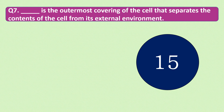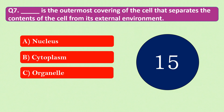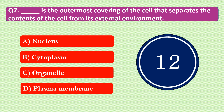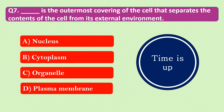Question number 7: Dash is the outermost covering of the cell that separates the contents of the cell from its external environment. The options are A. Nucleus, B. Cytoplasm, C. Organelle, or D. Plasma Membrane. Your time starts now. Your time is up and the right answer is option D: Plasma Membrane. Plasma Membrane is the outermost covering of the cell that separates the contents of the cell from its external environment.